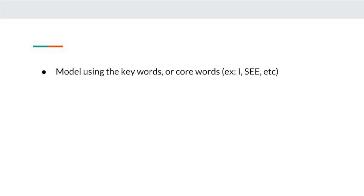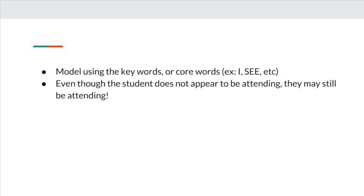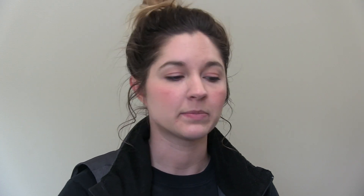The second takeaway is that the student doesn't have to look like they're attending in order to be attending. We know that this is common for kids with autism — they don't have great eye contact and visual attention. So the student might be looking away or doing something different. They may not be imitating or using the device. That doesn't mean they're not getting information or input from you modeling still using the device.